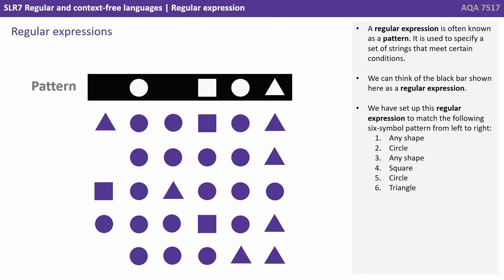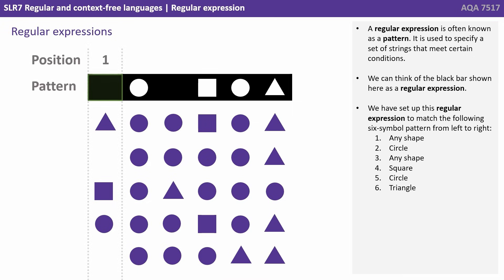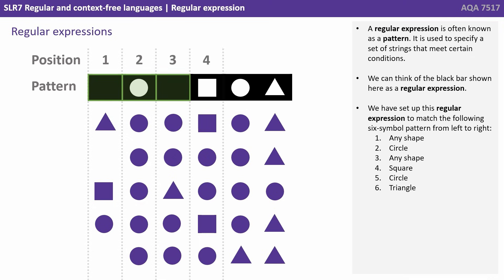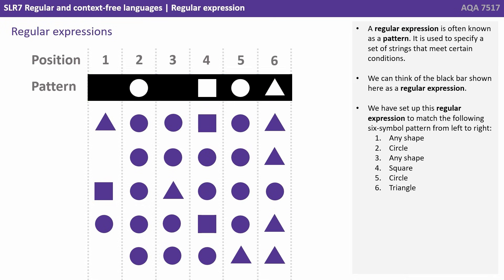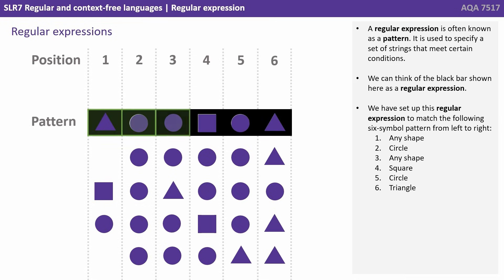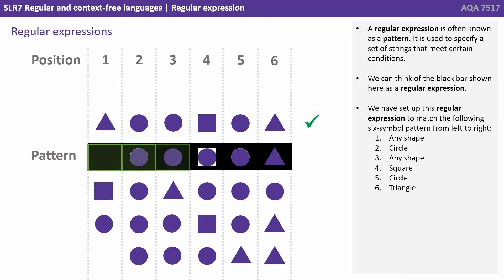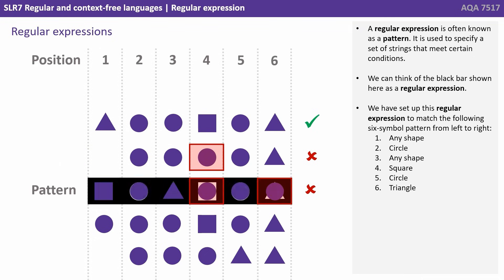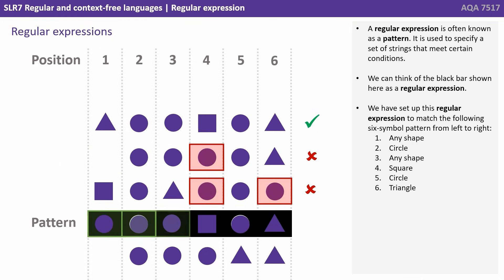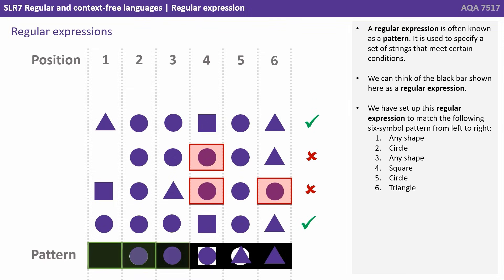We have set up this regular expression to match the following six symbol pattern from left to right: any shape, circle, any shape, square, circle, triangle. As we move down, we can use this regular expression to either match or unmatch the various patterns.